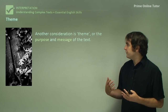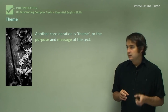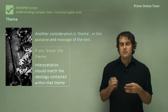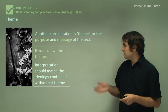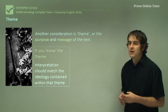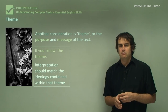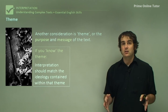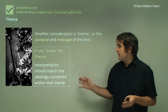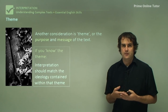Theme is the final thing — basically, look at the purpose and message of the text. Again, you don't want this to be conflicted. If you do know the theme — if you have an idea that this text is about a particular thing — then your interpretation should match the ideology contained within that theme. So if you're interpreting something and saying it represents death, and then you say the text is about life, that doesn't make sense. You need to make sure your interpretation connects with and continues to discuss that theme.